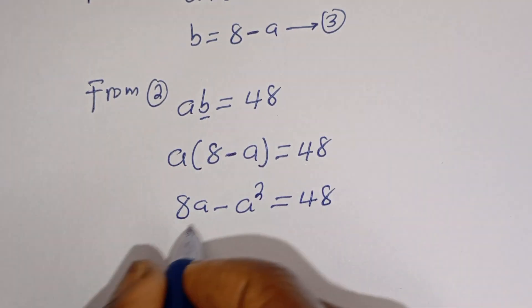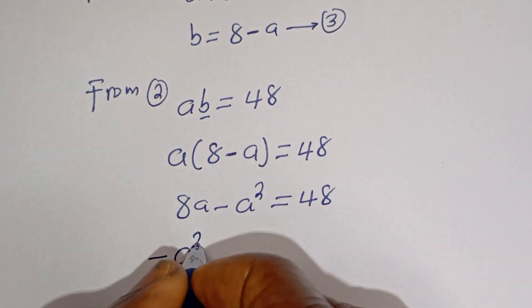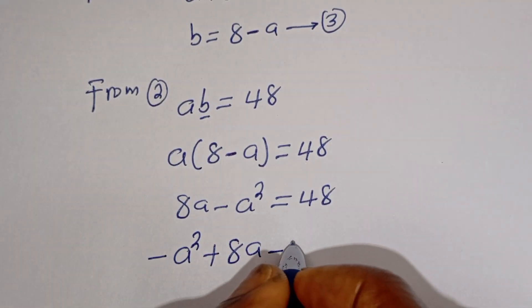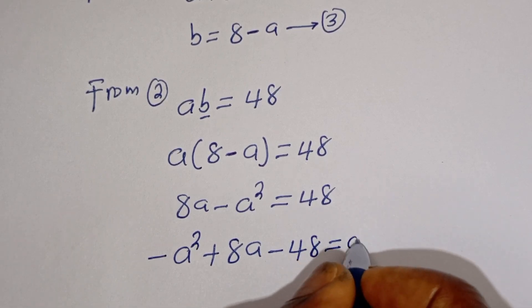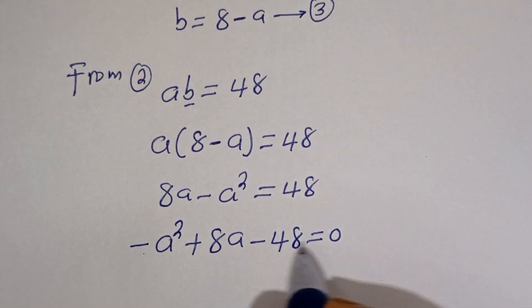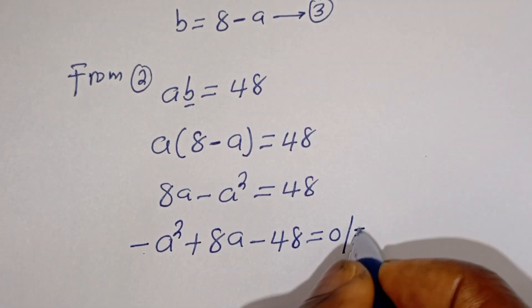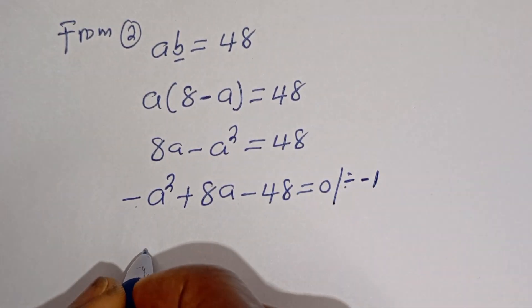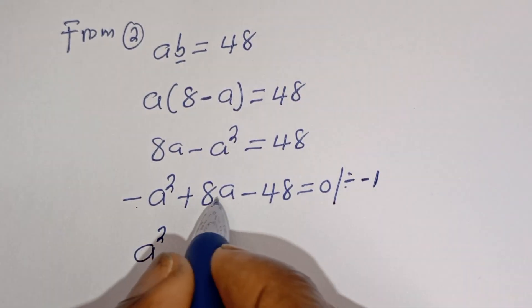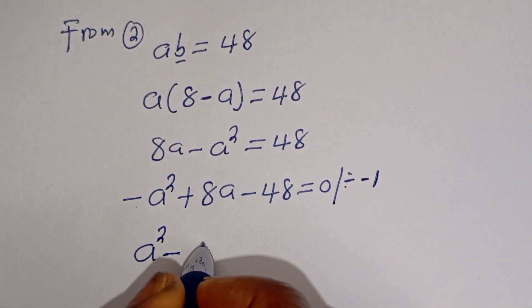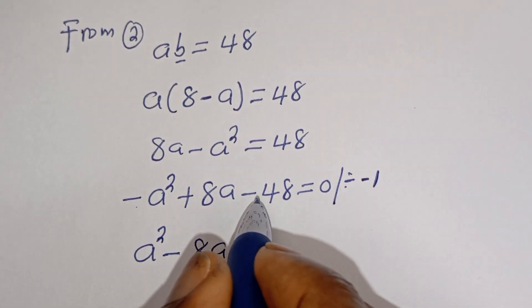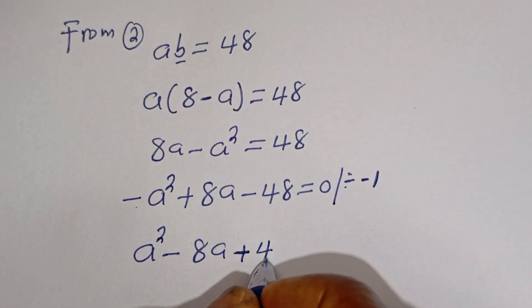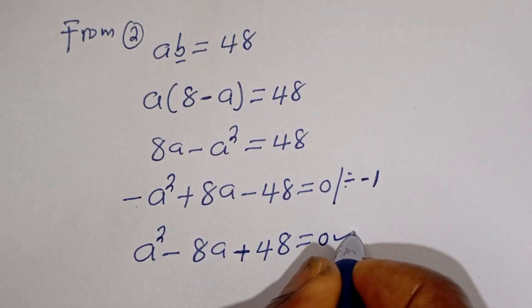We can rearrange this. We have minus A squared plus 8A. Bringing 48 to this side, it becomes minus A squared plus 8A minus 48 is equal to 0. Then we divide all terms by minus 1, which gives A squared minus 8A plus 48 is equal to 0. This is a quadratic equation.